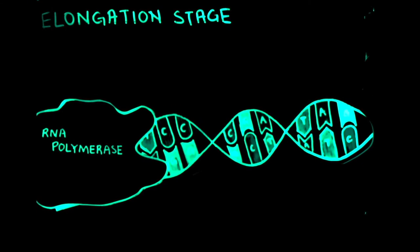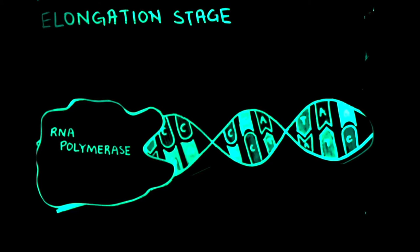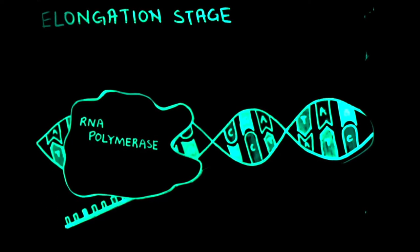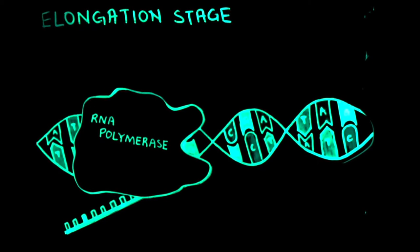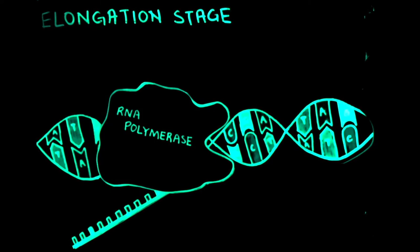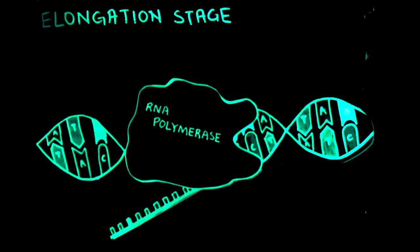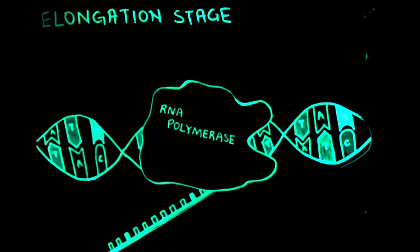During the elongation stage, the RNA polymerase moves along the length of the template DNA strand and uses it as a template to create a single strand of mRNA. As it moves along, it undoes the unwinding and closes the DNA, keeping only 10 to 20 base pairs exposed at a time.